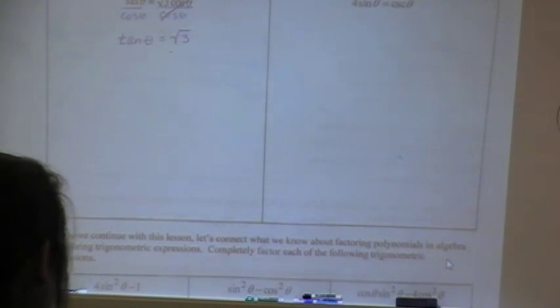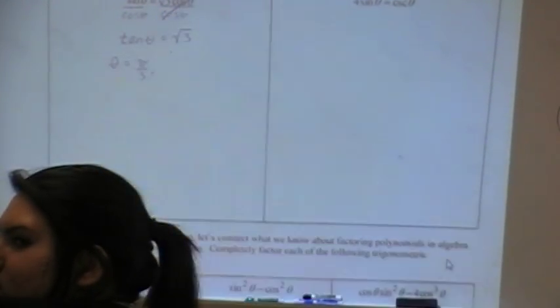Okay, so tangent is square root of 3 on the unit circle at pi over 3. But remember, we are going all the way around the unit circle, not just one answer, but we want all the answers on a trip around the unit circle. So it's not just pi over 3, but where is the other place that tangent would be positive?